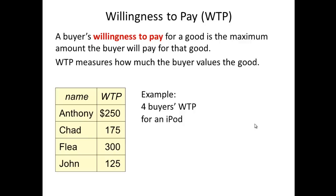In this example, we have four individuals: Anthony, Chad, Flea, and John. And we also have their willingness to pay for an iPod. Anthony is willing to pay up to $250, Chad is willing to pay up to $175, Flea is willing to pay up to $300, and John is willing to pay up to $125. When we look at their willingness to pay, there are some assumptions we can make about the individual consumers, but that's for another discussion.